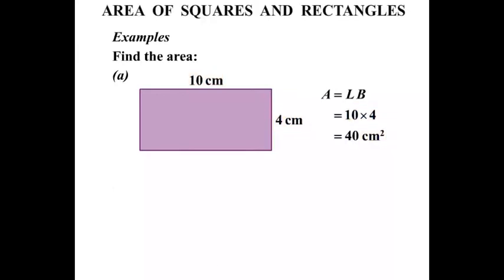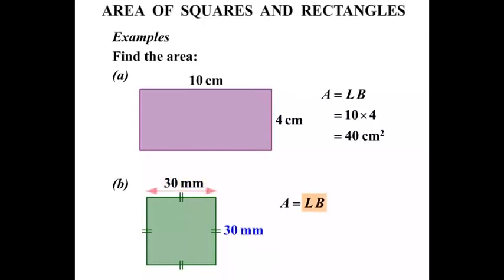The next one. This time we have a square where one of the side lengths is written as 30 millimeters. Area equals length times breadth. Now if one side is 30 millimeters, then all the sides are 30 millimeters. So length times breadth, the length is 30, the breadth is also 30, so it equals 30 times 30. And we multiply those two numbers together, we get 900, and the units are millimeters squared.